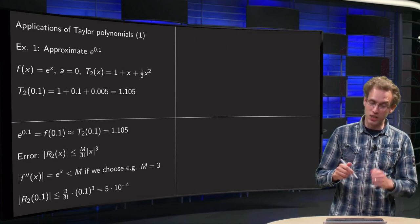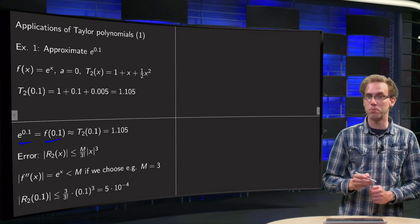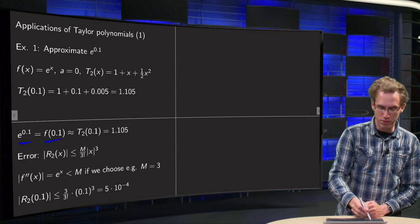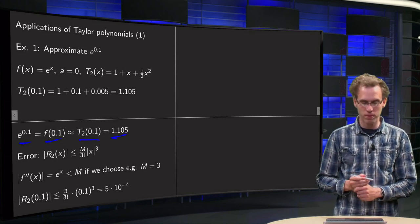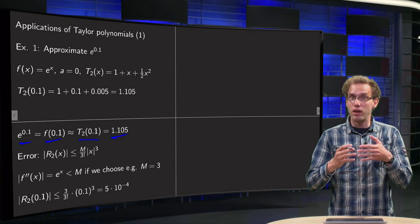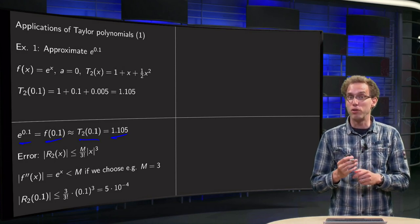And now the trick is that your e to the power 0.1, or your f in 0.1, is approximately equal to the second Taylor polynomial in the point was this. So what's the error, so how far are we from the true value?